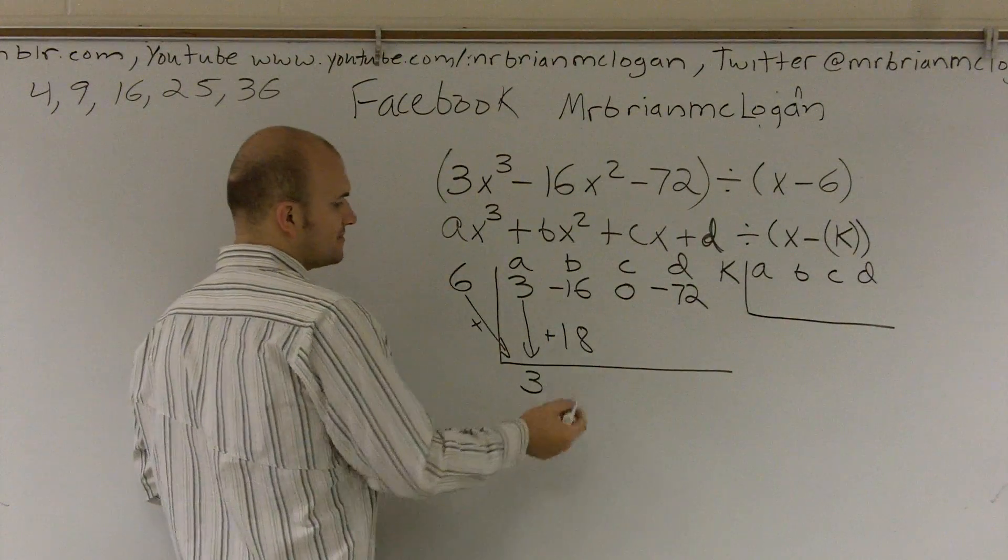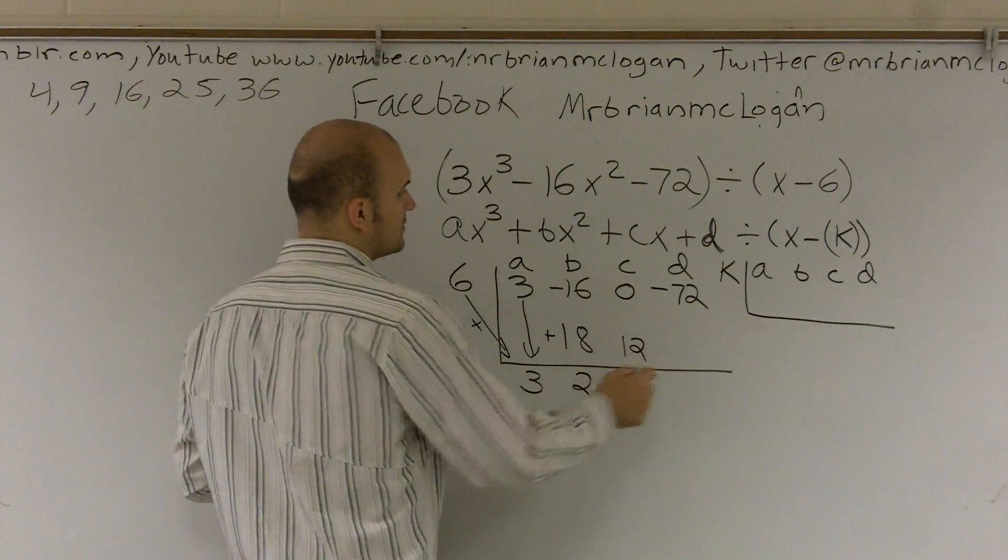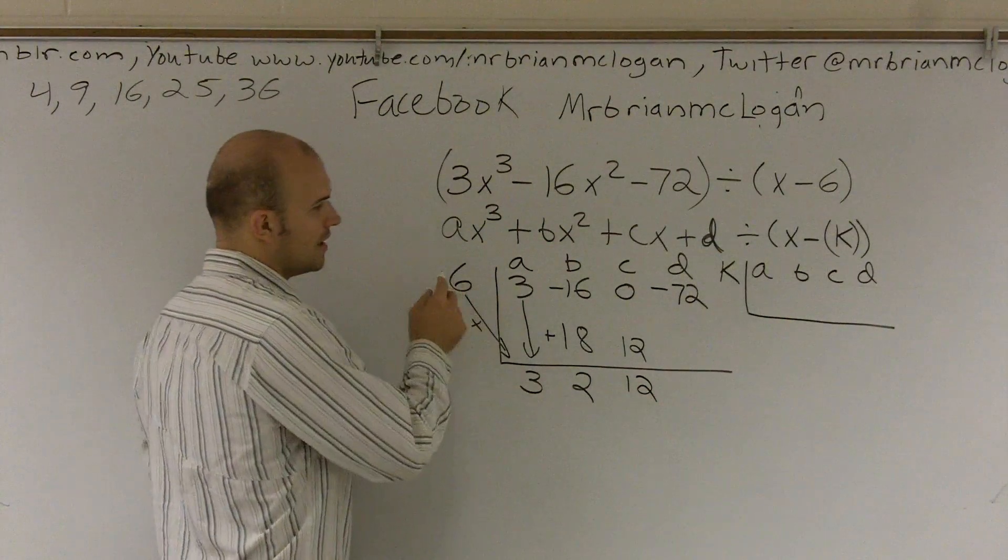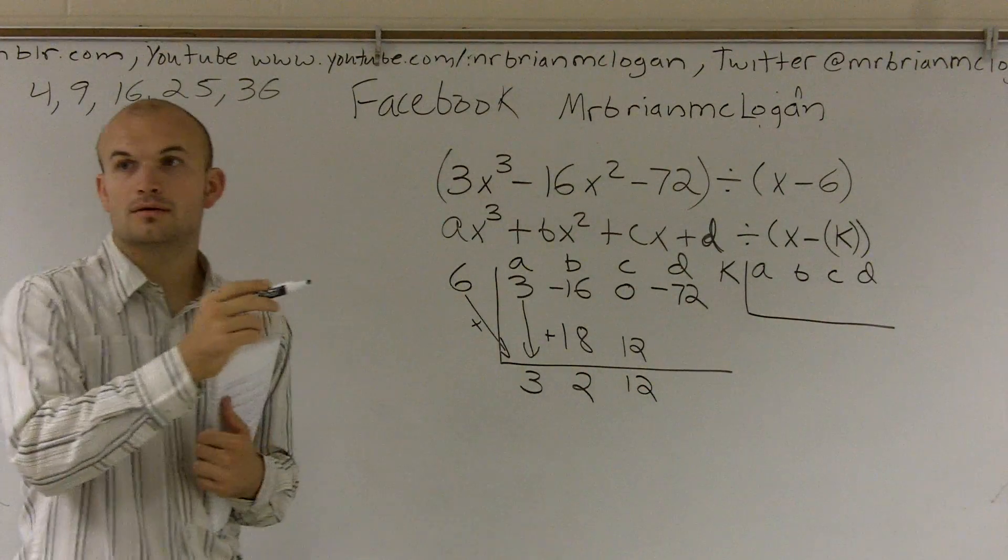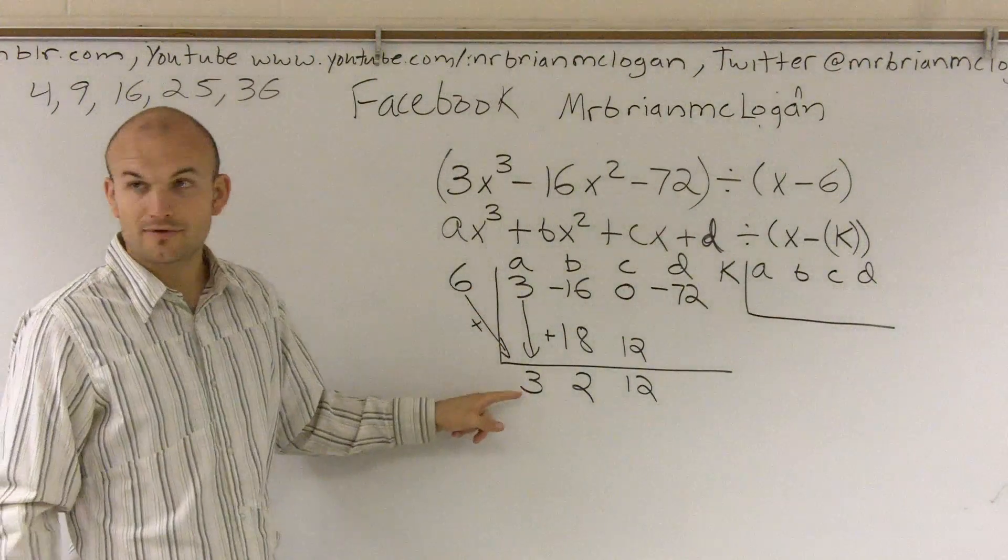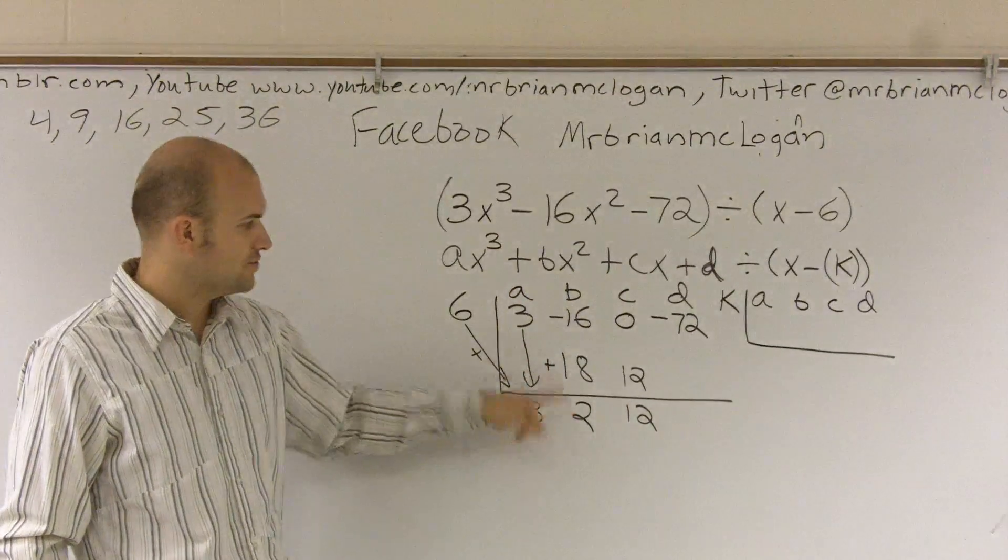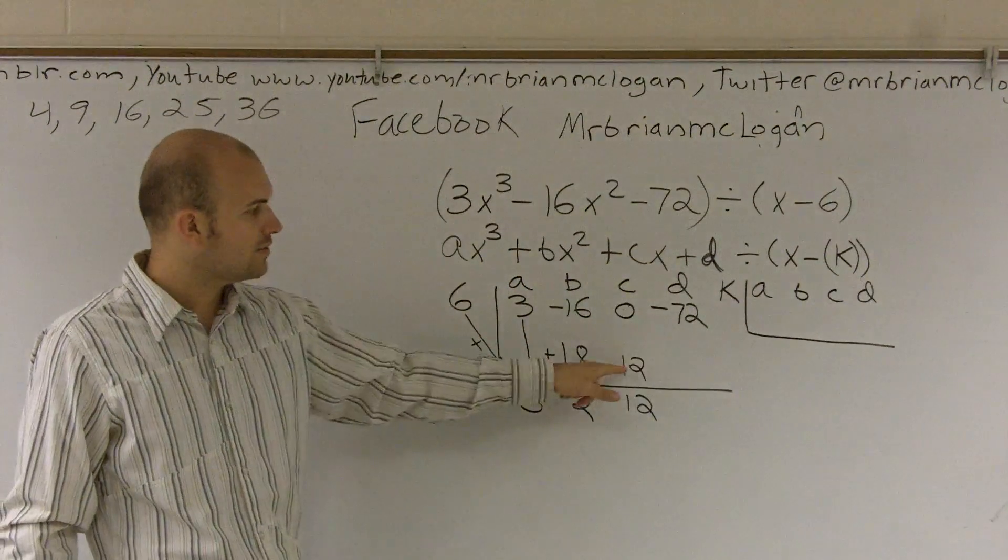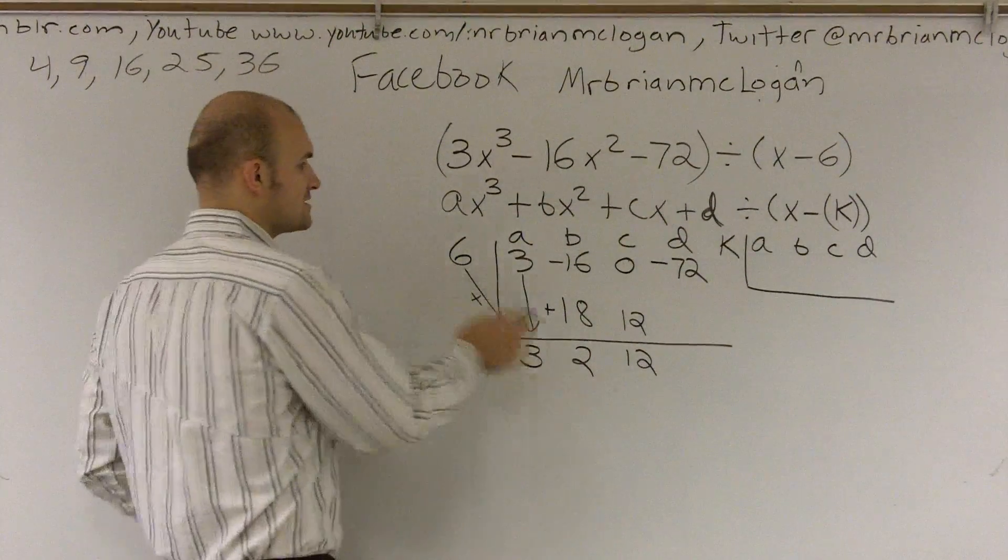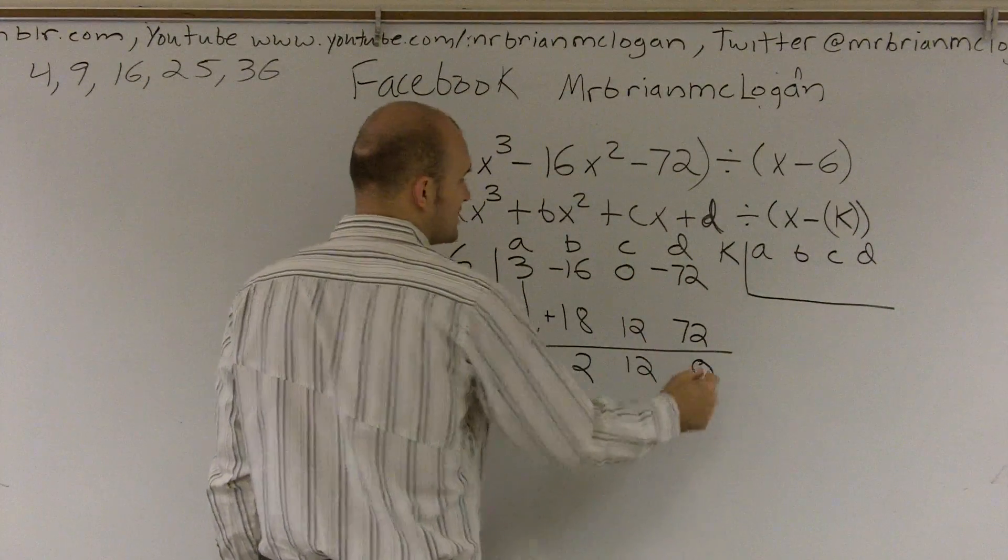Negative 16 plus 18 is going to be a positive 2. 6 times 2 is 12. 0 plus 12 is 12. And then 6 times 12 is going to be a positive 72. Negative 72 plus 72 is 0.